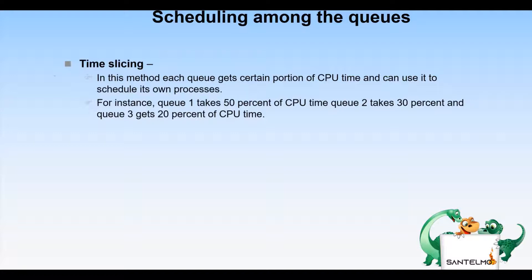The second method is time slicing, where each queue gets a certain portion of the CPU time to schedule its own processes. For instance, Q1 takes 50%, Q2 takes 30%, and Q3 takes 20% of the CPU time. When using two queues, it could be 80% for foreground and 20% for background.